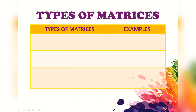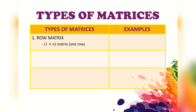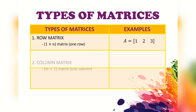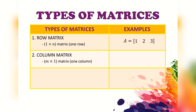Now let us take a look at the types of matrices. Number one: a row matrix. A row matrix is a one by n matrix — in other words, the matrix has only one row. This is the example of the row matrix. Number two: a column matrix, which has only one column.